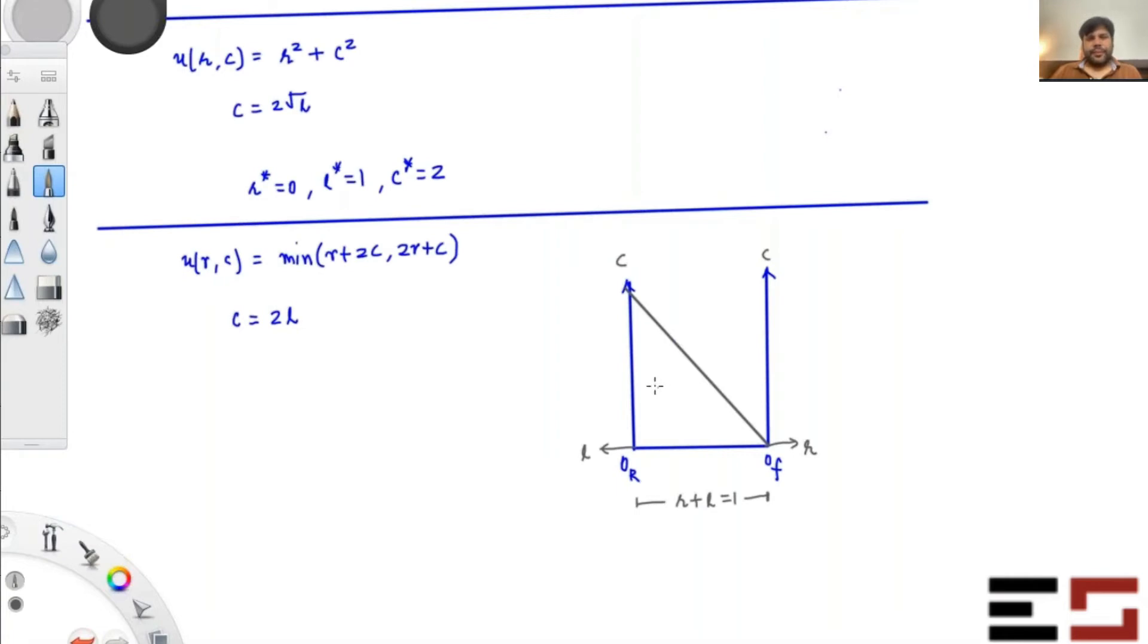Now, let's plot the indifference curves. The line of kinks for the indifference curves will be a 45-degree line like this. If you plot the indifference curves, this is how they're going to look. The slope of the indifference curve will be 2 here and half here. So the highest possible IC will be like this. The slope in this region in absolute terms is going to be 2, and in this region, it's going to be half. It's going to coincide with the production function in this region.